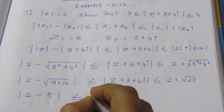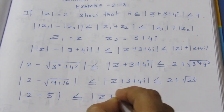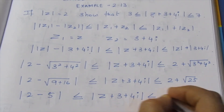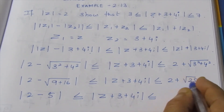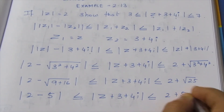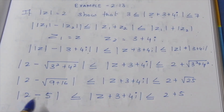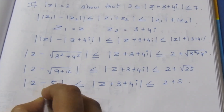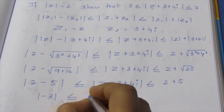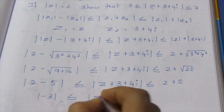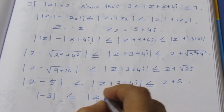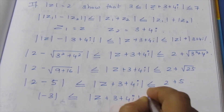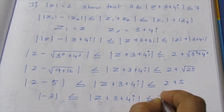So modulus less than or equal to Z plus 3 plus 4i less than or equal to 2 plus 5. That gives us 2 minus 5 equals minus 3, and the next step: minus 3 less than or equal to modulus Z plus 3 plus 4i less than or equal to 7.